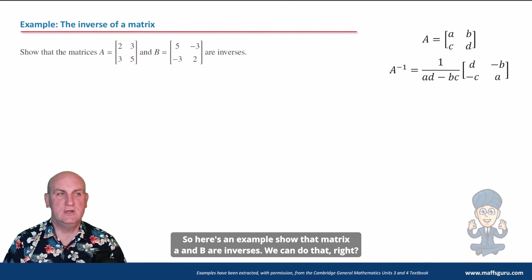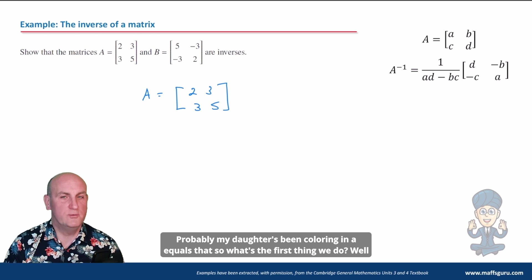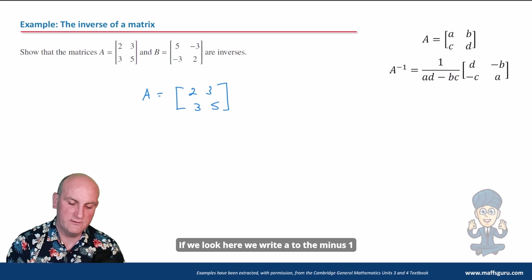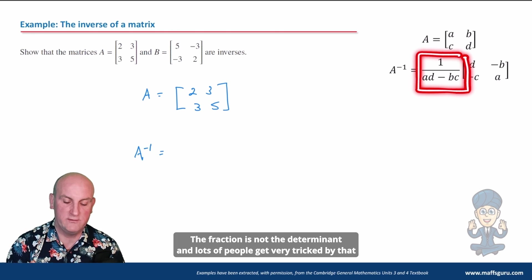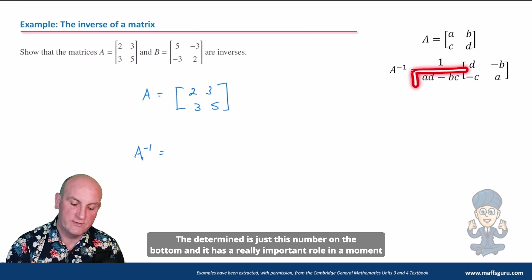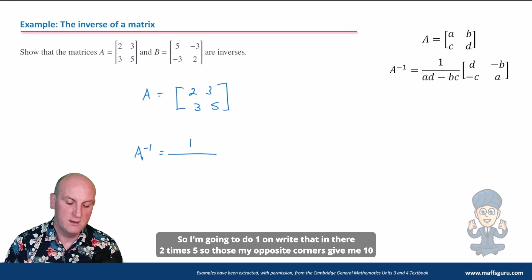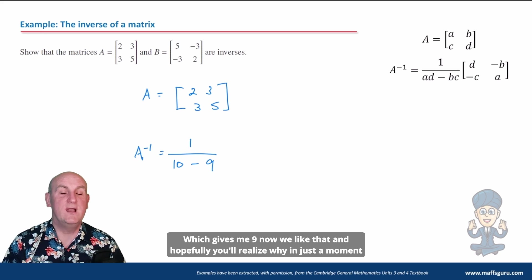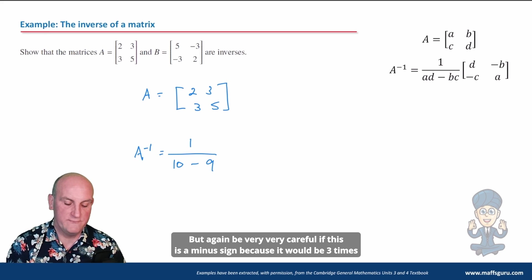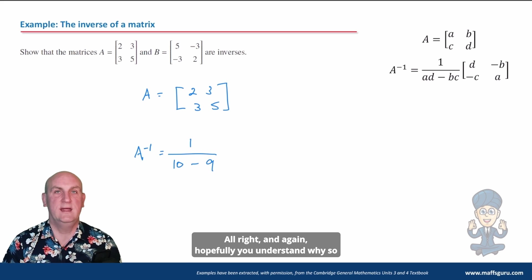Here's an example: show that matrix A and B are inverses. A equals the matrix [2, 3; 3, 5]. We write A to the minus one and work out the determinant. Take the opposite corners: two times five gives ten, subtract three times three which gives nine, so the determinant is one. Be careful — if any value were negative, for example minus three, then three times minus three would be minus nine, making the subtraction a plus.